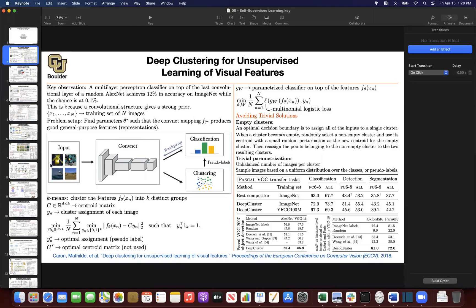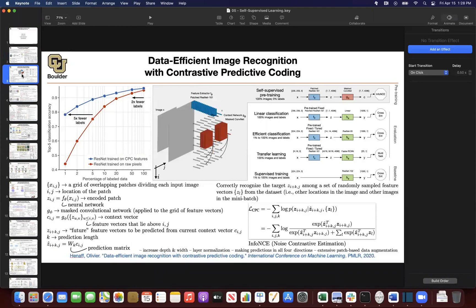The drawback with that method was that each time you need to look at your entire data set, push all of them through your convolutional neural network, and then do the clustering. Once you have your labels, then you can do mini-batch stochastic gradient descent. Then we moved on to contrastive predictive coding,